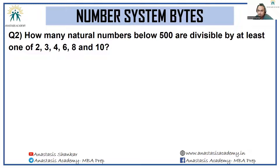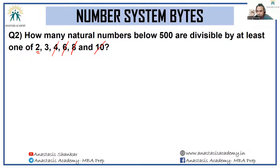Next question: how many natural numbers below 500 are divisible by at least one of 2, 3, 4, 5, 6, 8, or 10? The key insight is that 2 is a factor of 4, 6, 8, and 10 — so removing multiples of 2 already removes multiples of those numbers. This question reduces to just multiples of 2 and 3.